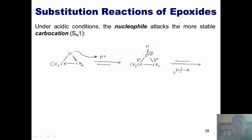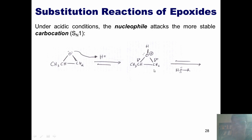Keep in mind that because this oxygen is positively charged, it's going to be pulling electrons toward itself. That gives both of these carbons some partial positive charge. Which of the two carbons is going to have the stronger partial positive charge?